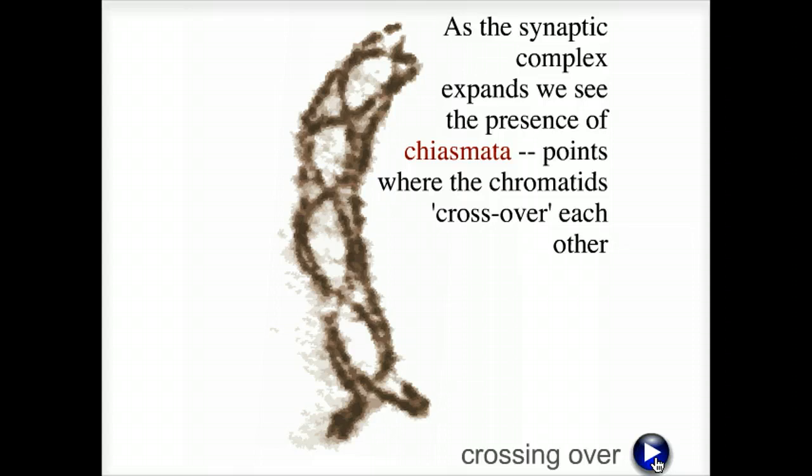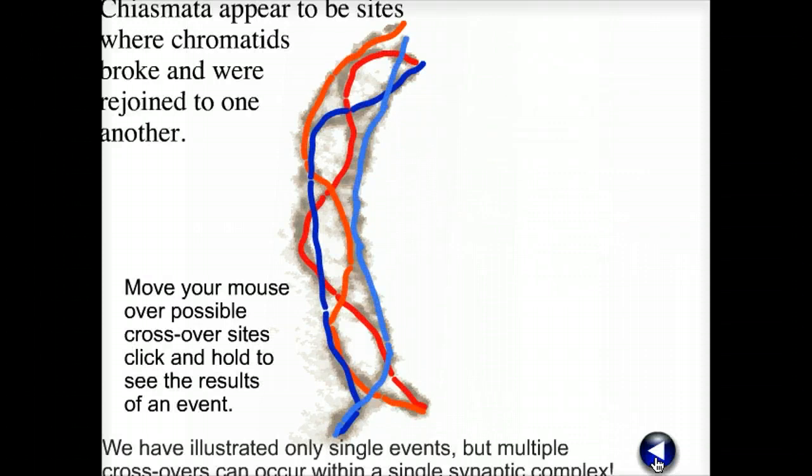As the synaptic complex expands, we can see the presence of chiasmata, points where the chromosomes cross over each other. Chiasmata appear to be sites where chromatids were broken and then rejoined.